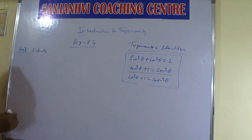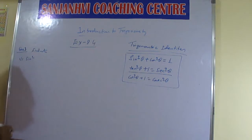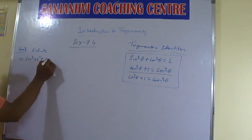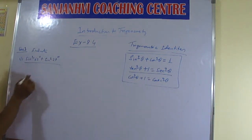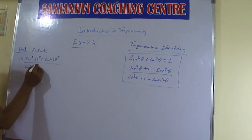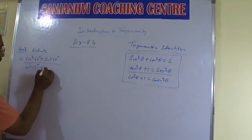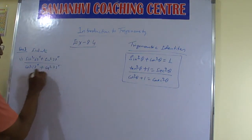So what? Sine square 63 degree plus sine square 27 degree, divided by cos square 70 degree plus cos square 73 degree.